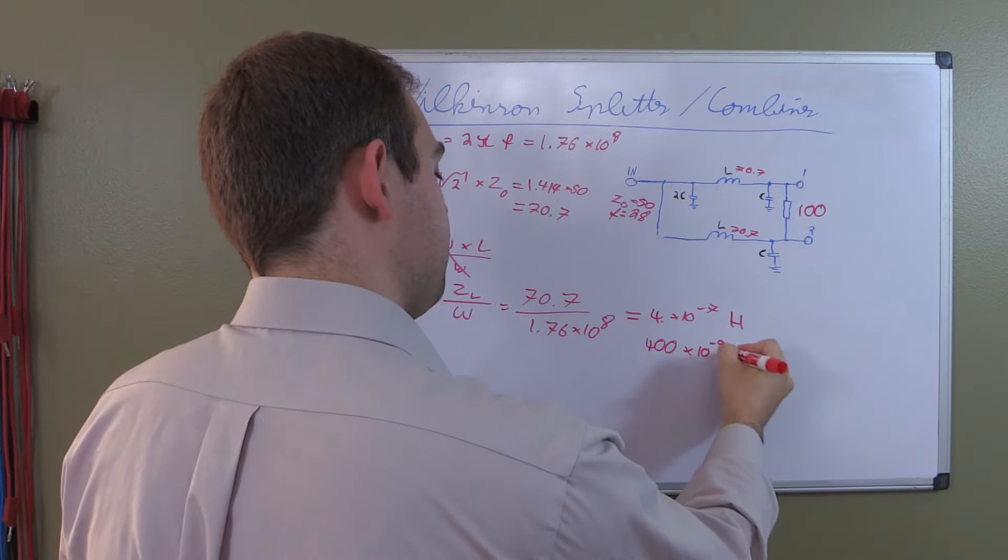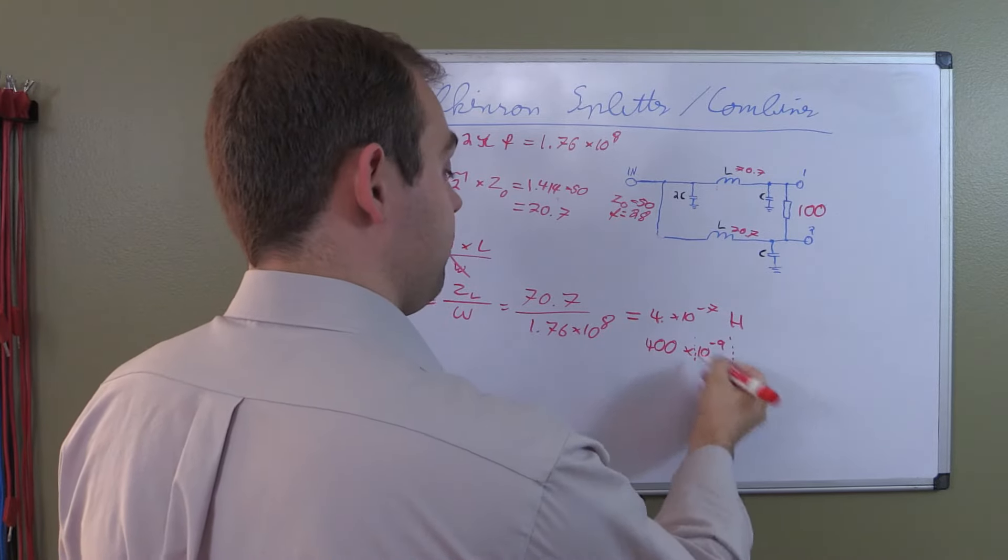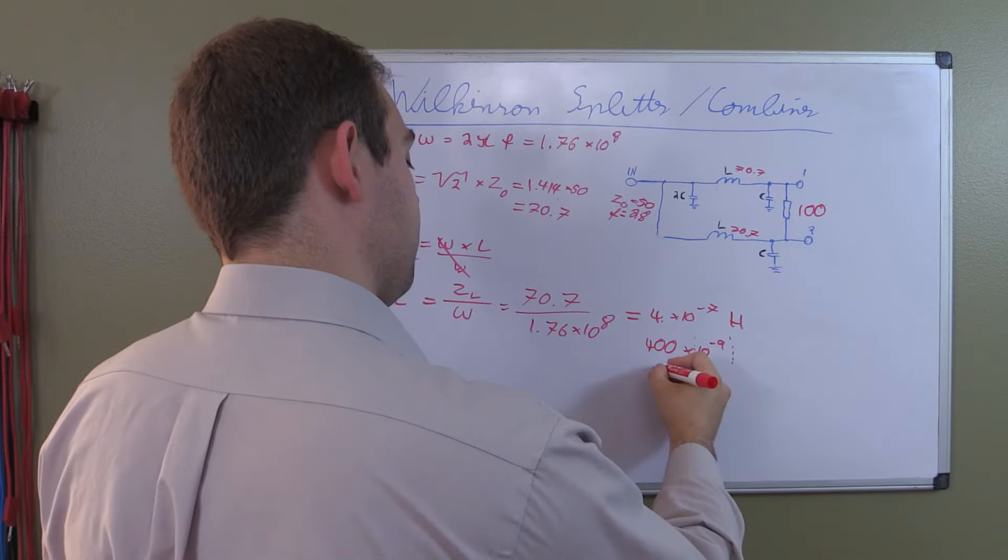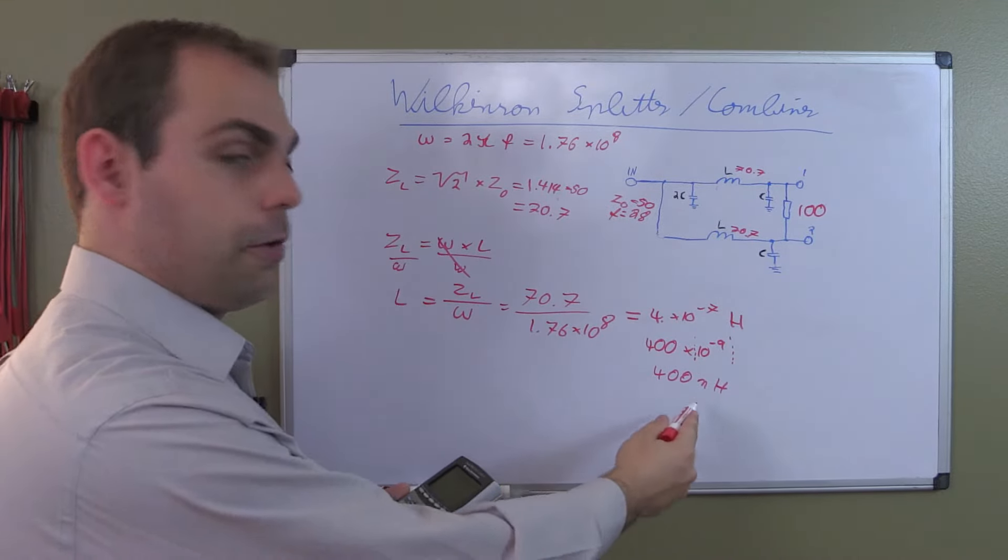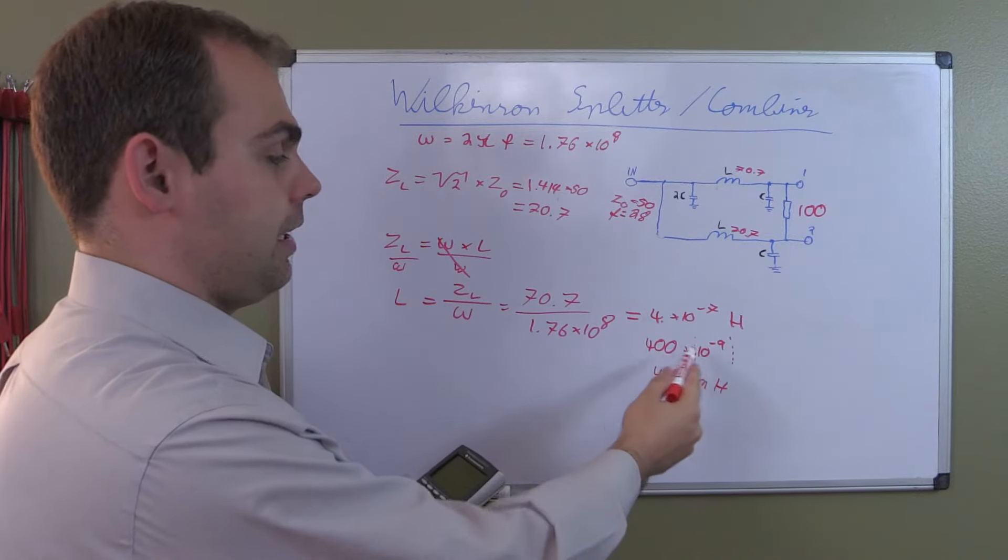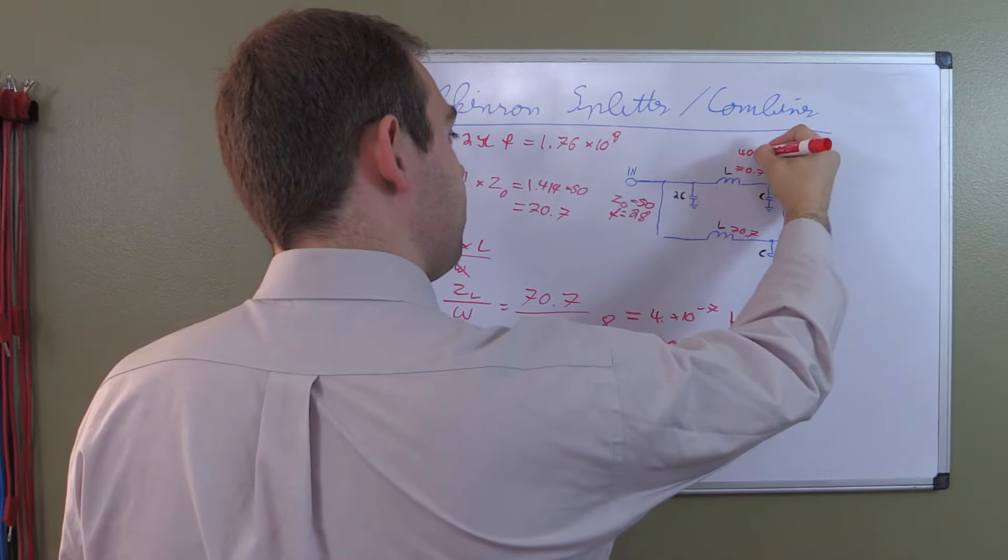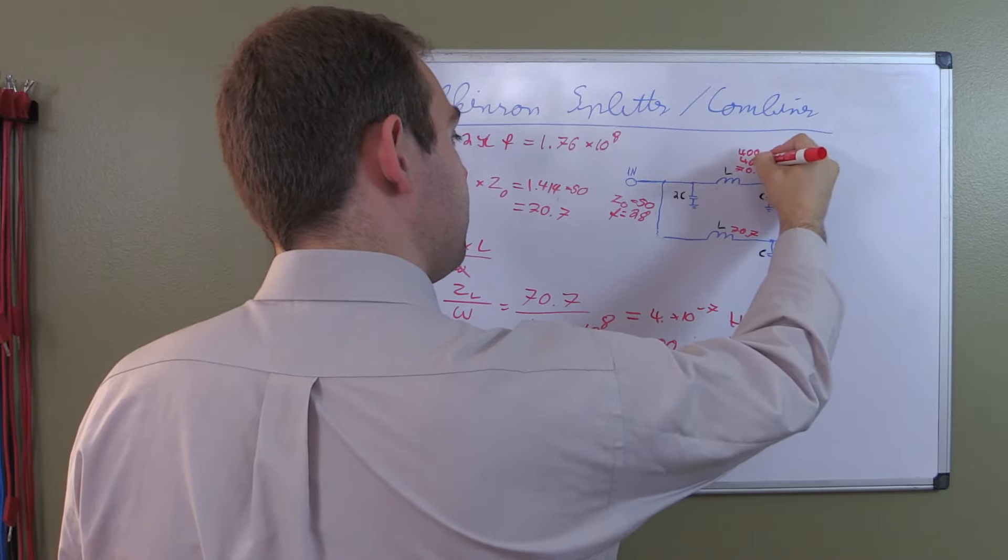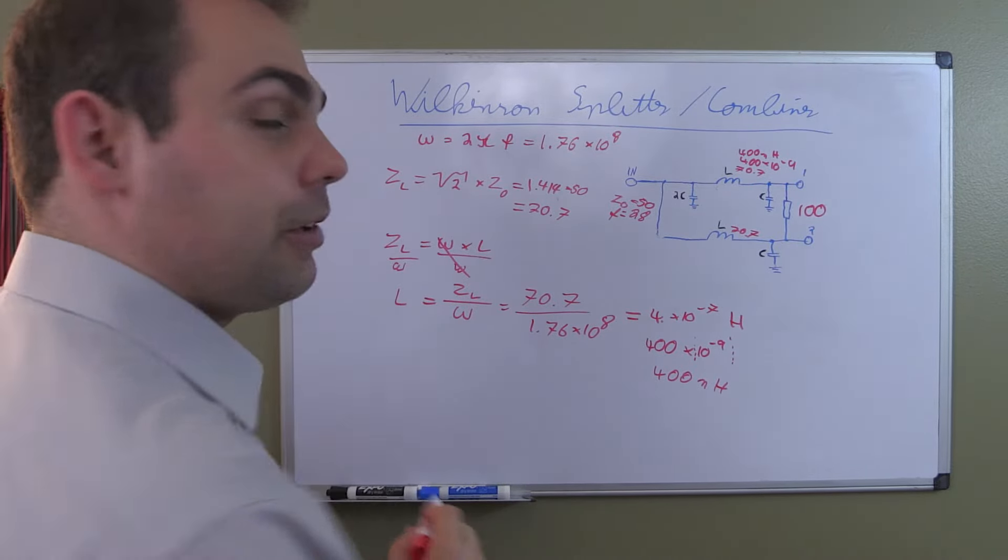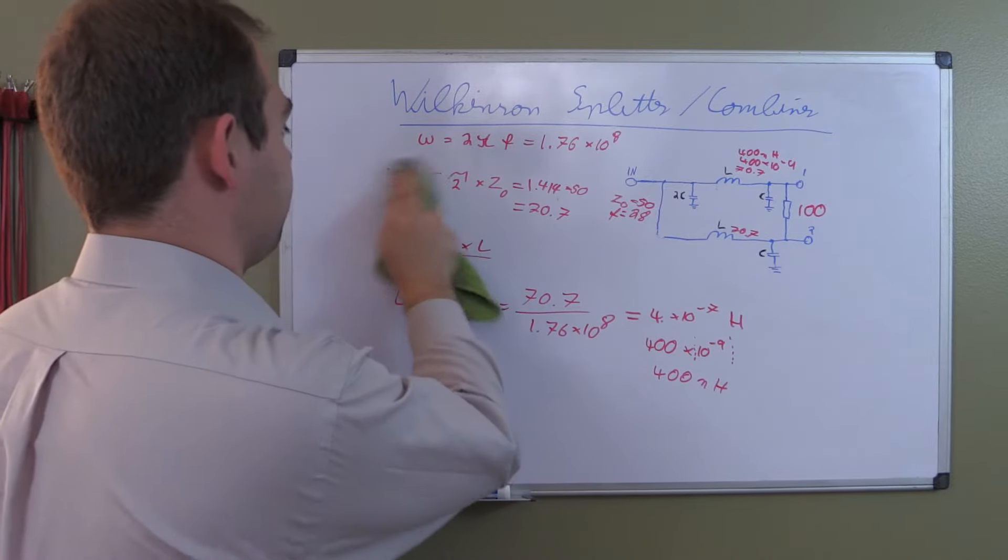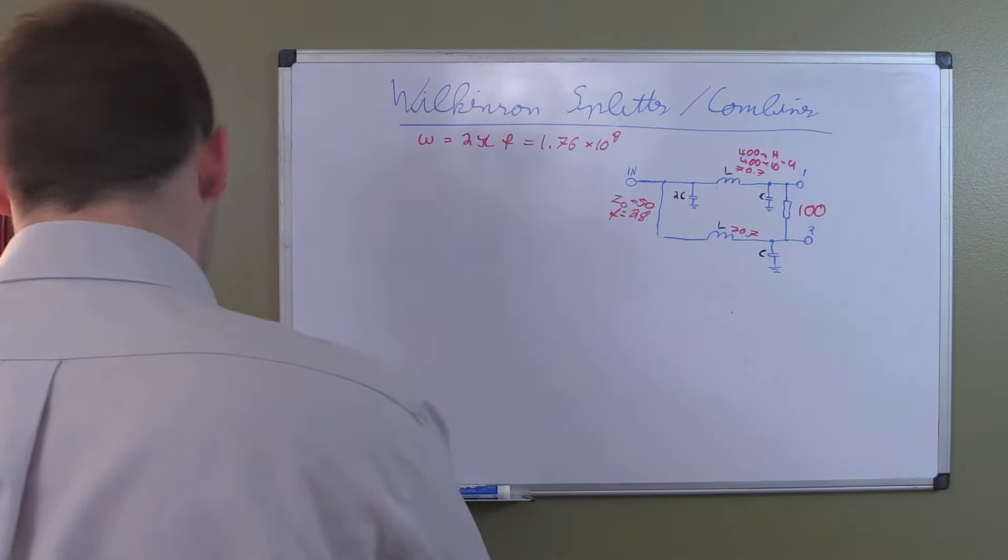So it is 4 times 10 to the power of negative 7 Henry. Let's think about that for a moment. The calculator gives it to you, and sometimes it is useful, sometimes not directly. But we can move this virtual comma by two steps and get it to 10 to the power of negative 9. That's nano Henrys. So we now know that this is 400 nano Henrys for us to know what part to pick or order.